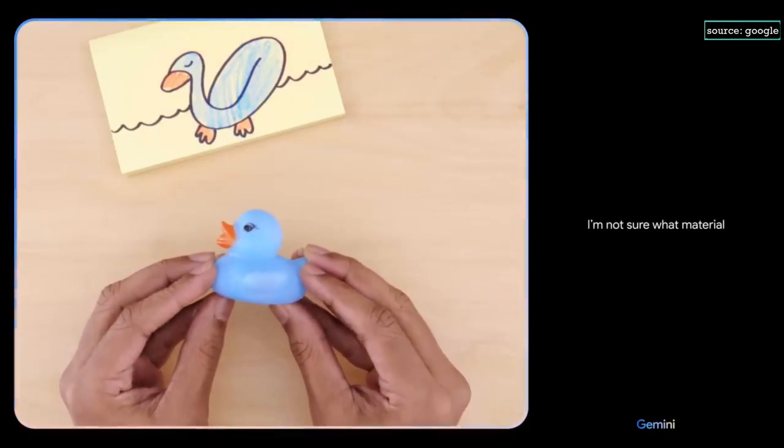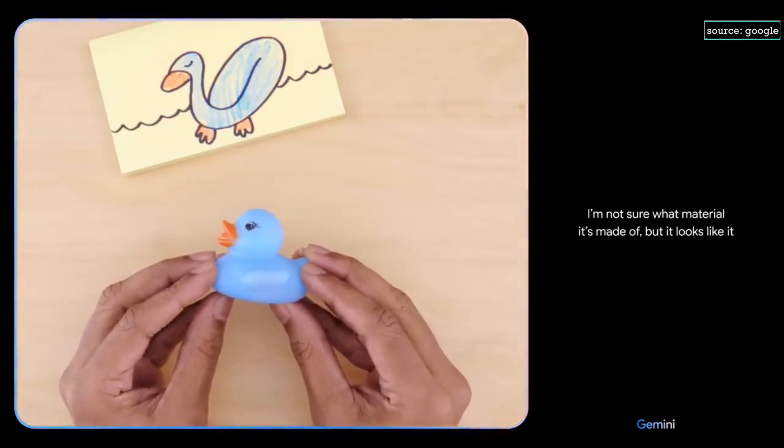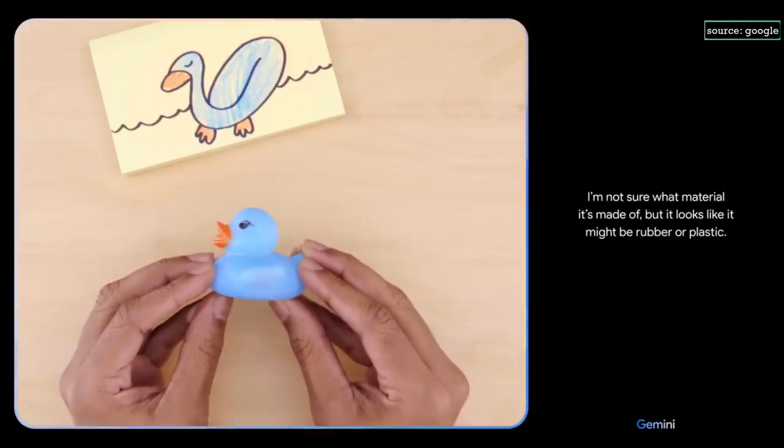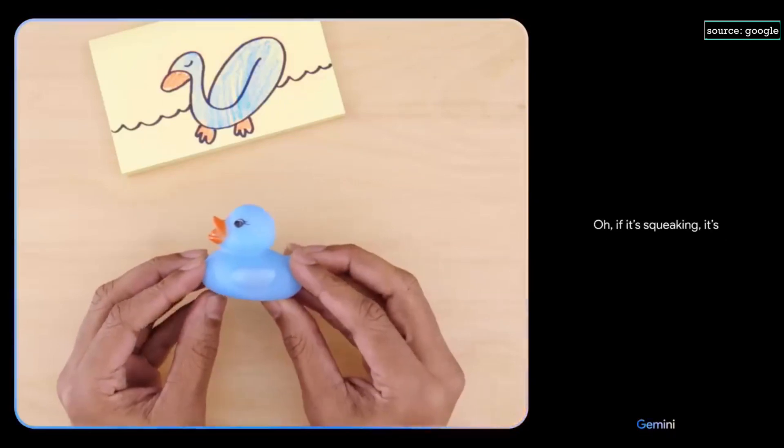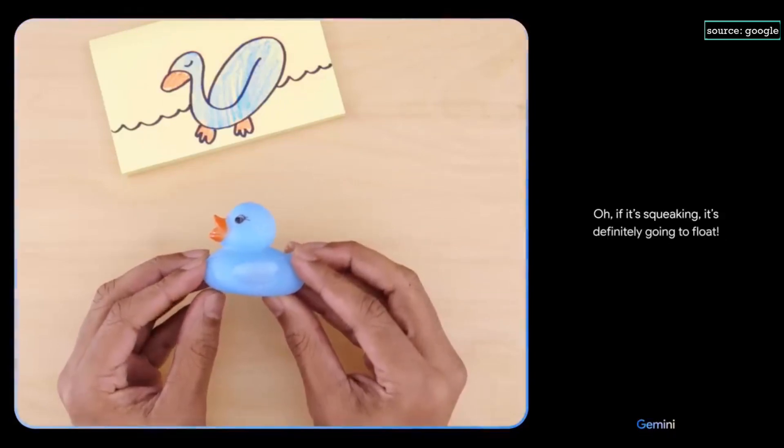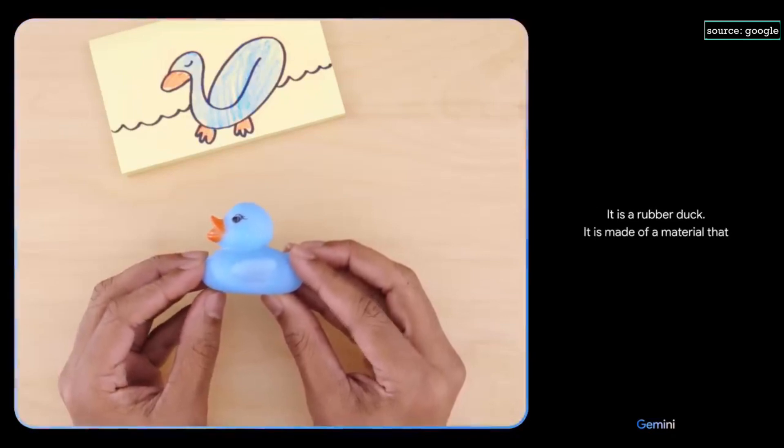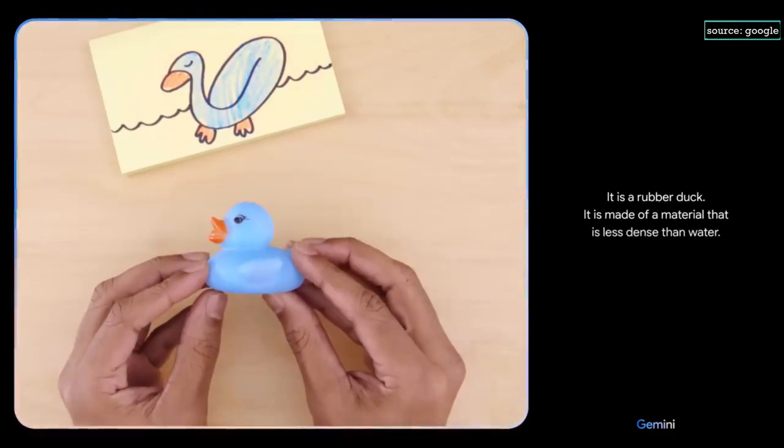Would this float? I'm not sure what material it's made of, but it looks like it might be rubber or plastic. What if I tell you it's making a squeaking sound? Oh, if it's squeaking, it's definitely going to float. Nice. It is a rubber duck. It is made of a material that is less dense than water.